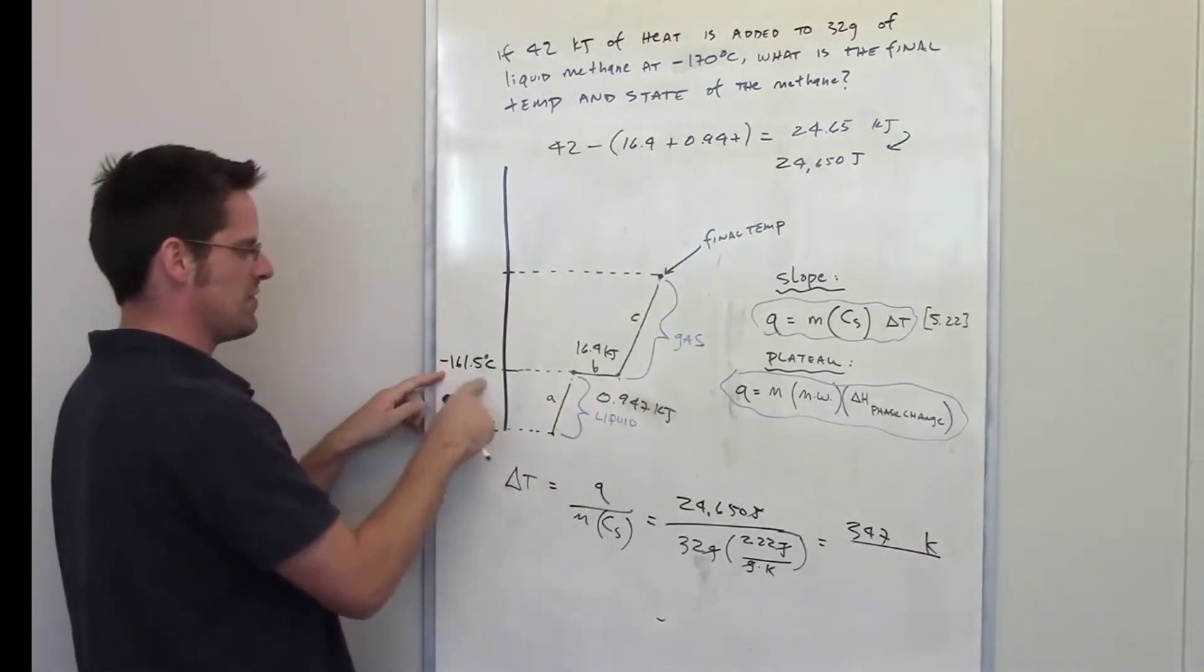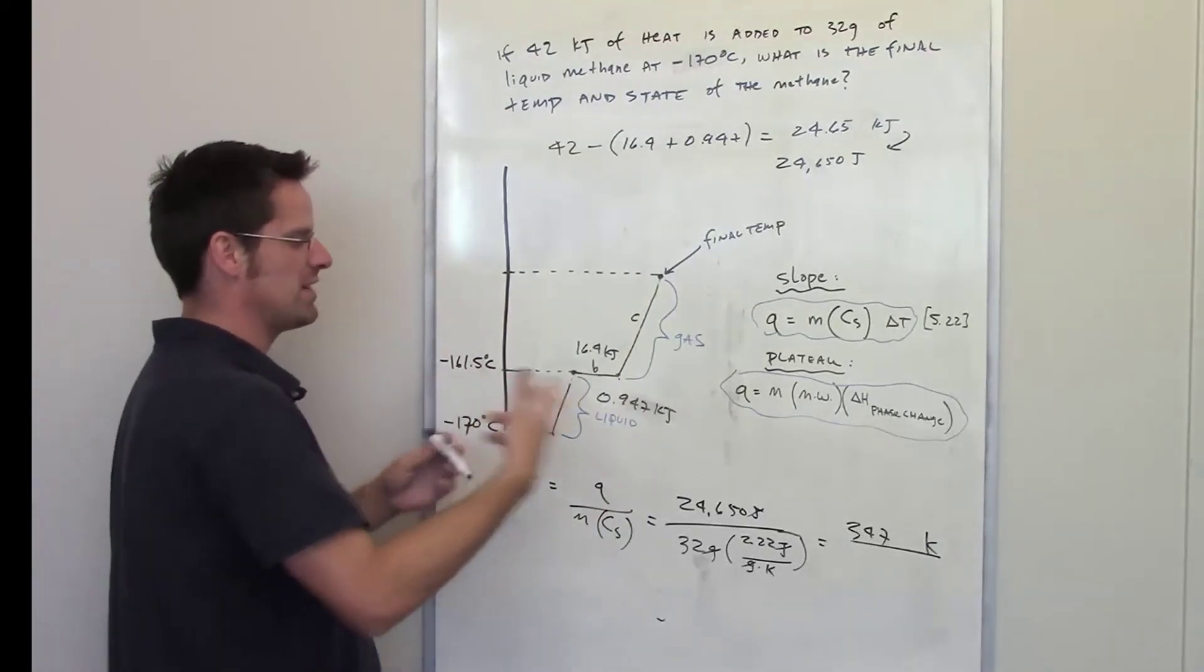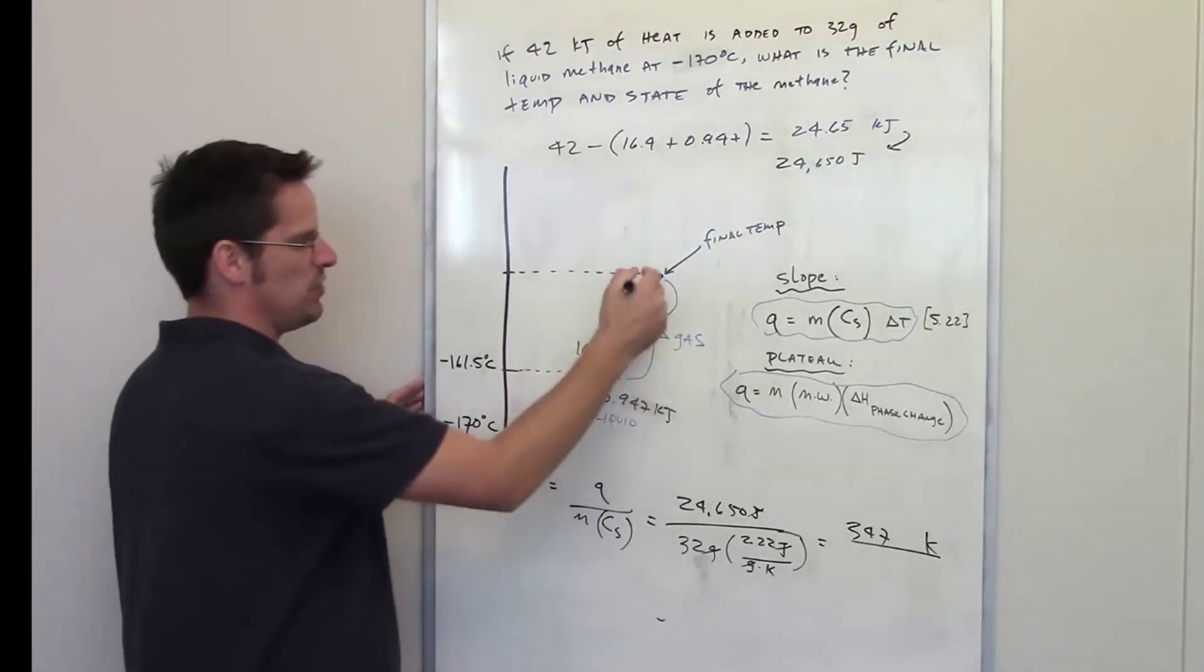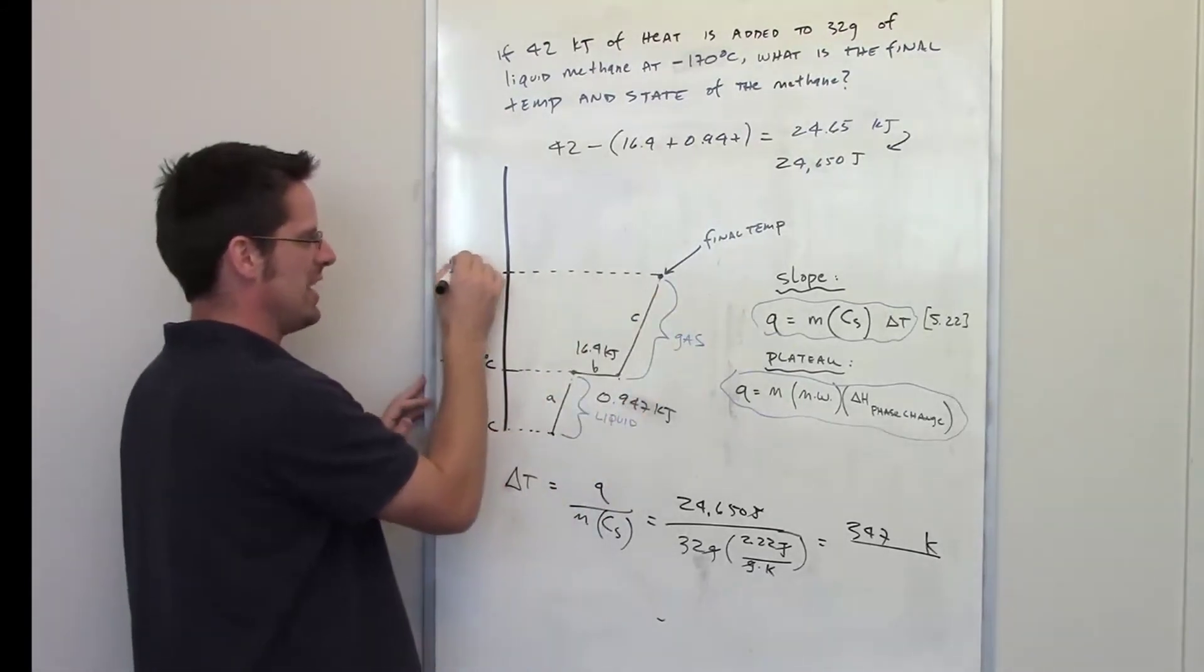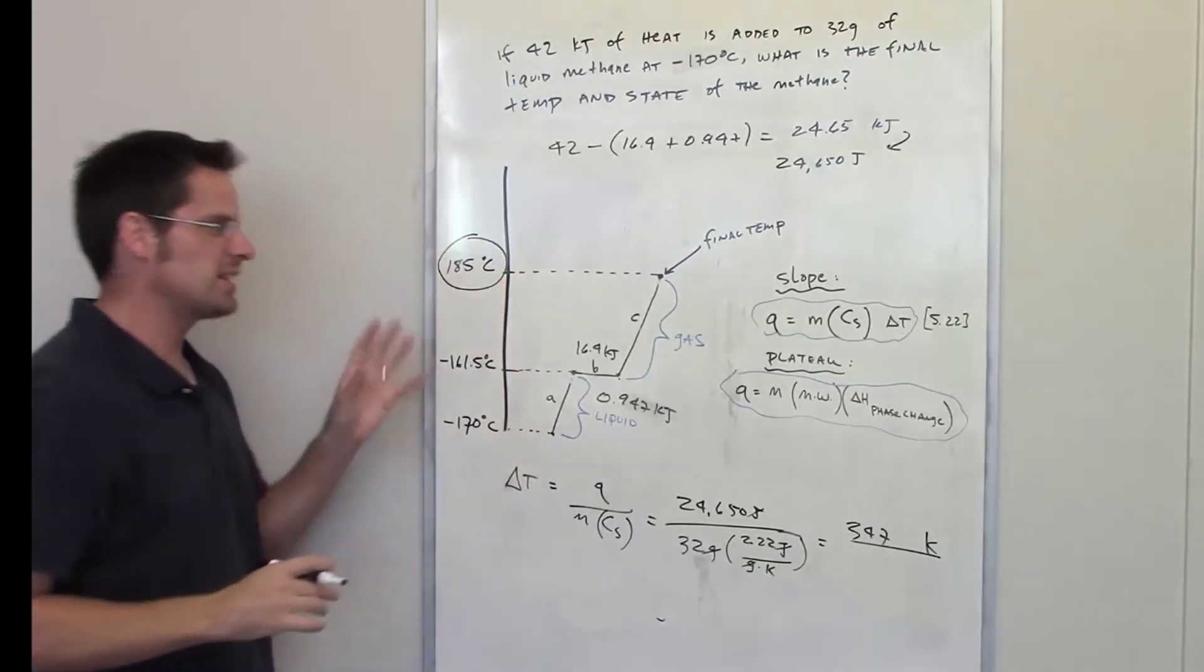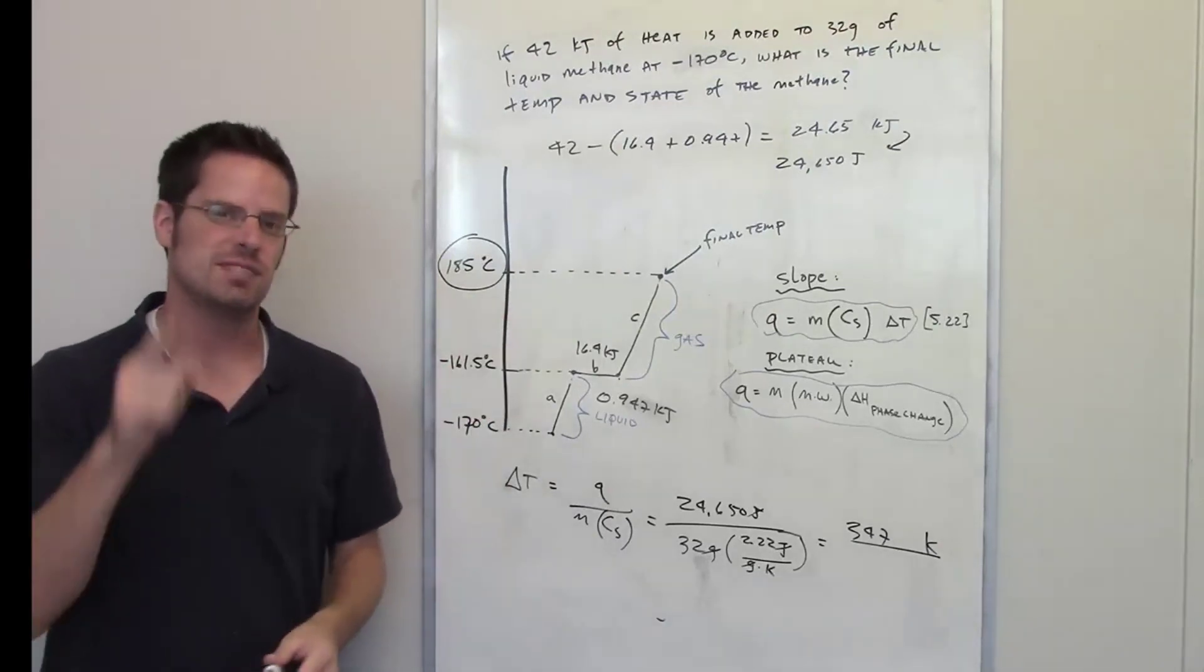I'm starting at a temperature of negative 161.5 degrees Celsius, and I add 347 to it. I should get to a final temperature of 185 degrees Celsius. So that is the answer. That's the final temperature. And it asks you what the final state is, and the final state is a gas.